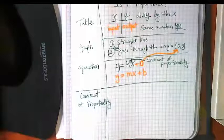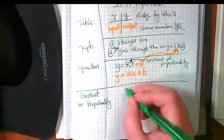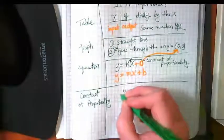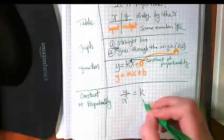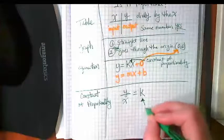And then finally, the constant of proportionality. I didn't use words really, I just wrote Y divided by X equals K, and that the K is the constant of proportionality.